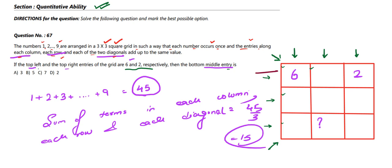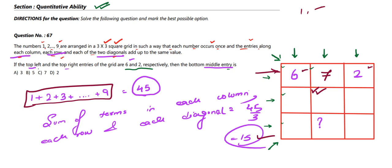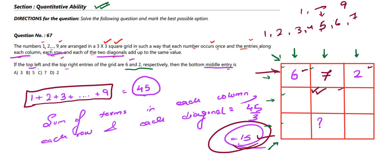In the first row we have 6 and 2, which sum to 8. Subtracting from 15, the top-middle entry must be 7. The center block is the middle of the grid, and to maintain the sum of 15 in all directions, it must hold the centermost number from 1 to 9, which is 5.